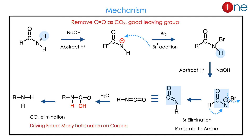The mechanism involves removal of the CO2 group — CO is removed as CO2. In the first step, base abstracts a proton and an anion forms, then bromine compensates the anion. In the next step, proton abstraction occurs again, then the R group migrates and rearrangement occurs. Bromine is the good leaving group and leaves, giving you isocyanate. In the next step, water attacks and amine formation occurs.